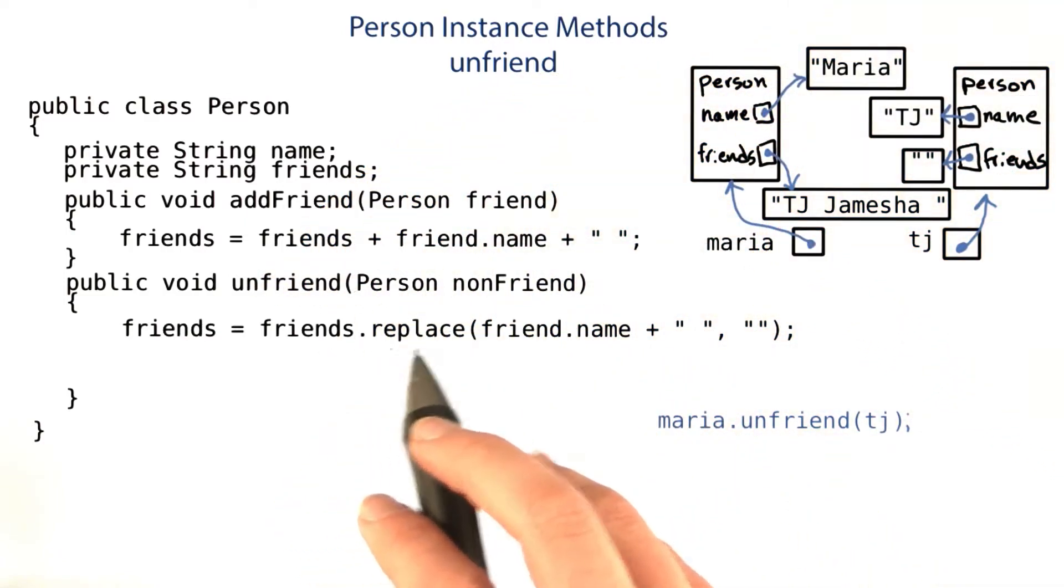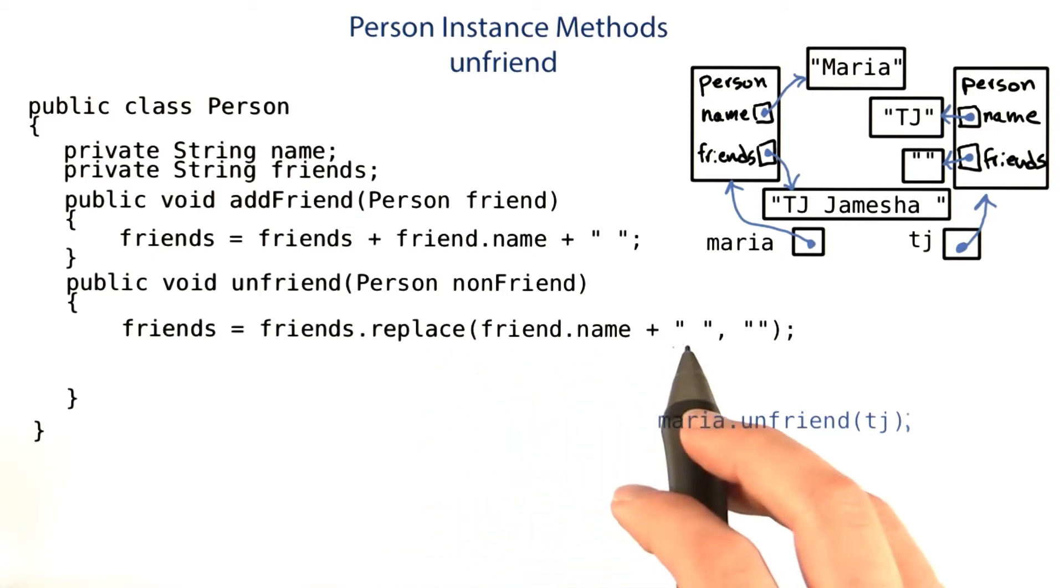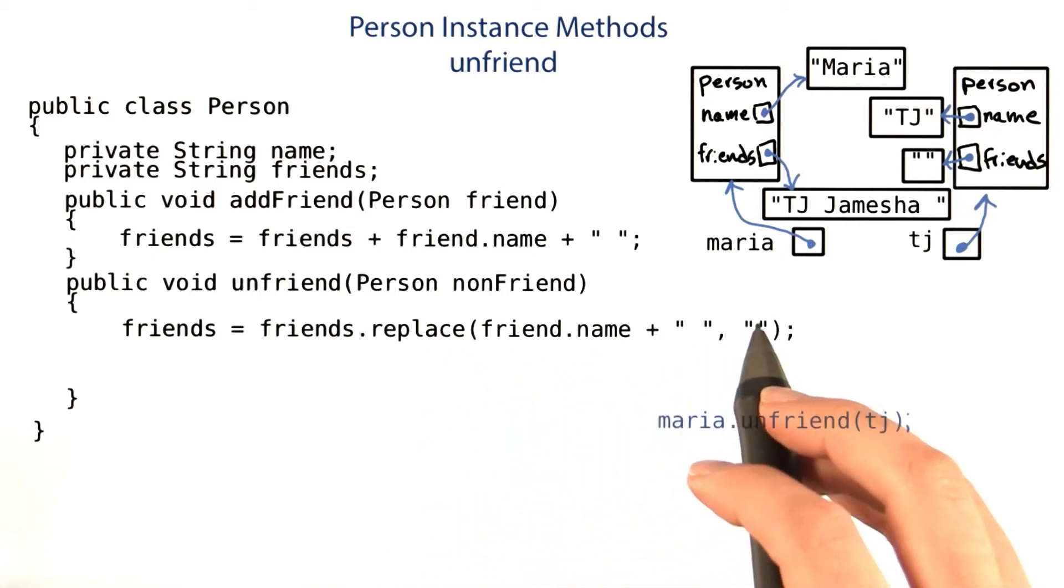The first thing that happens is we call friends.replace friend.name with a space after it, and then replace it with an empty string.